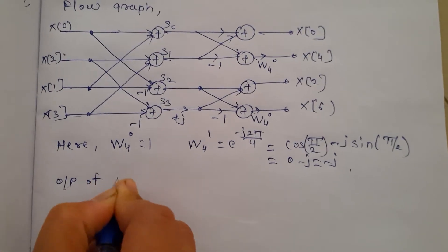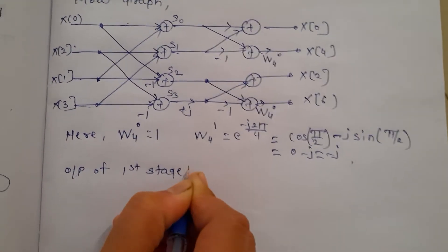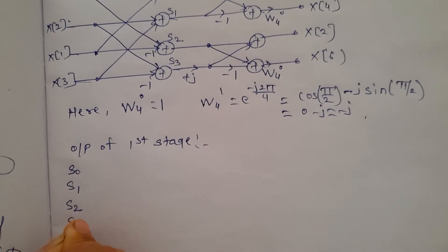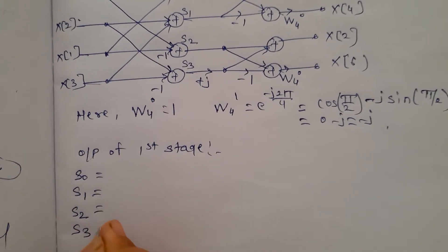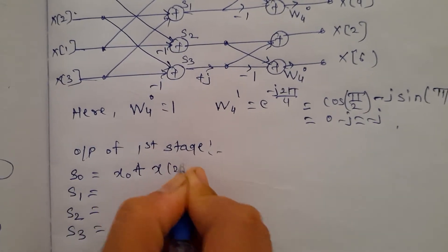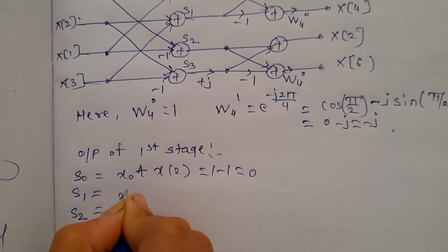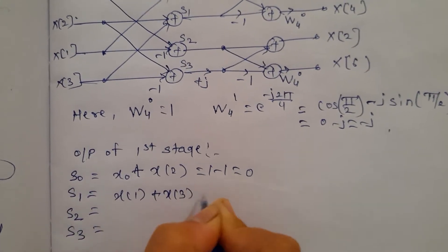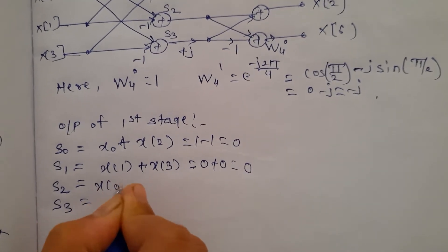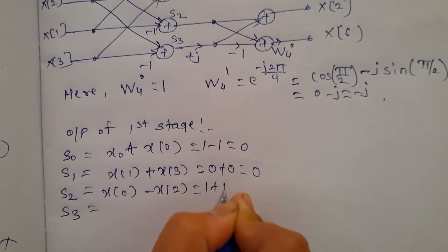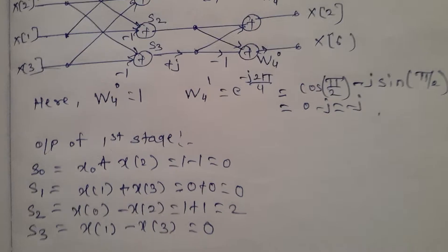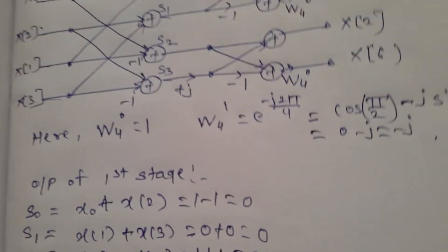Output of the first stage: we find s0, s1, s2, and s3. So s0 = x(0) + x(2) = 1 + (-1) = 0, s1 = x(1) + x(3) = 0, s2 = x(0) - x(2) = 1 - (-1) = 2, and s3 = x(1) - x(3) = 0.